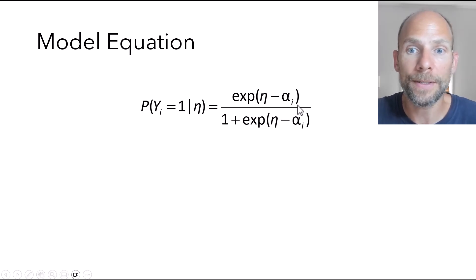So this is a constant. The alpha i is constant across individuals, whereas eta can vary between individuals because everybody could have a different ability score, different spatial ability score, for example.